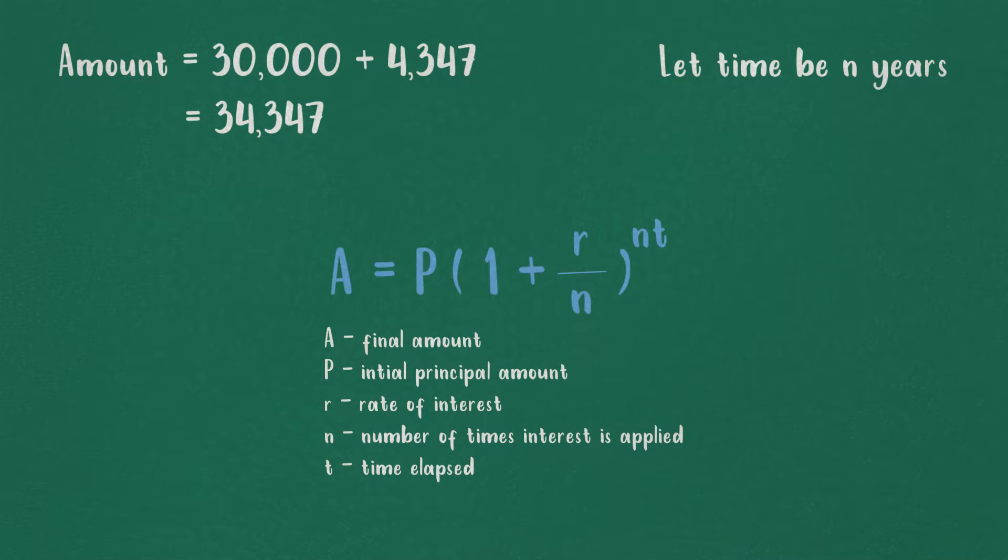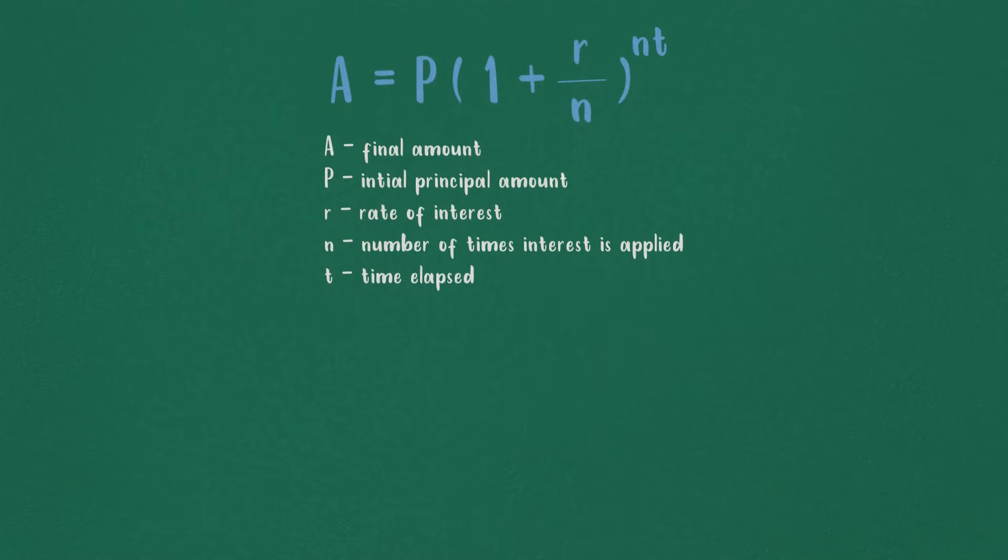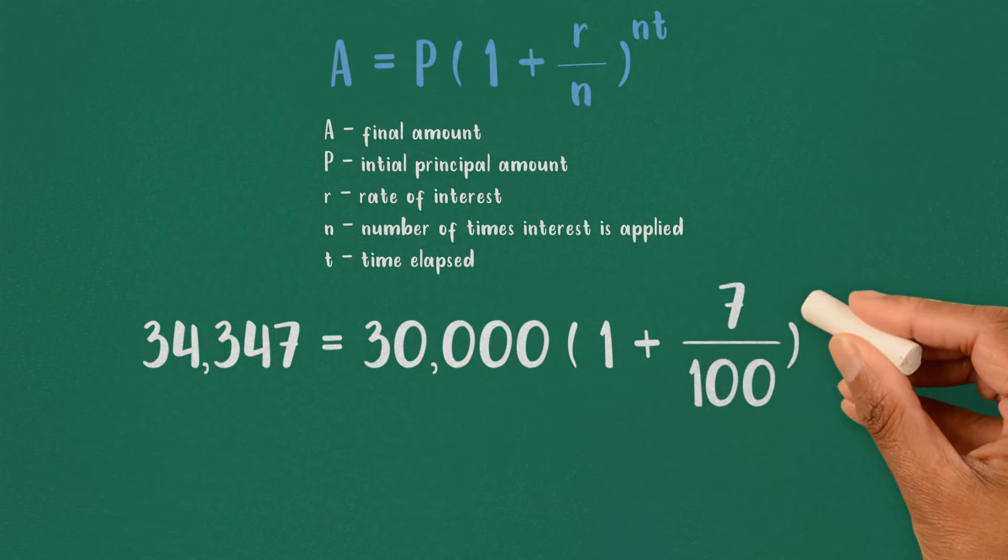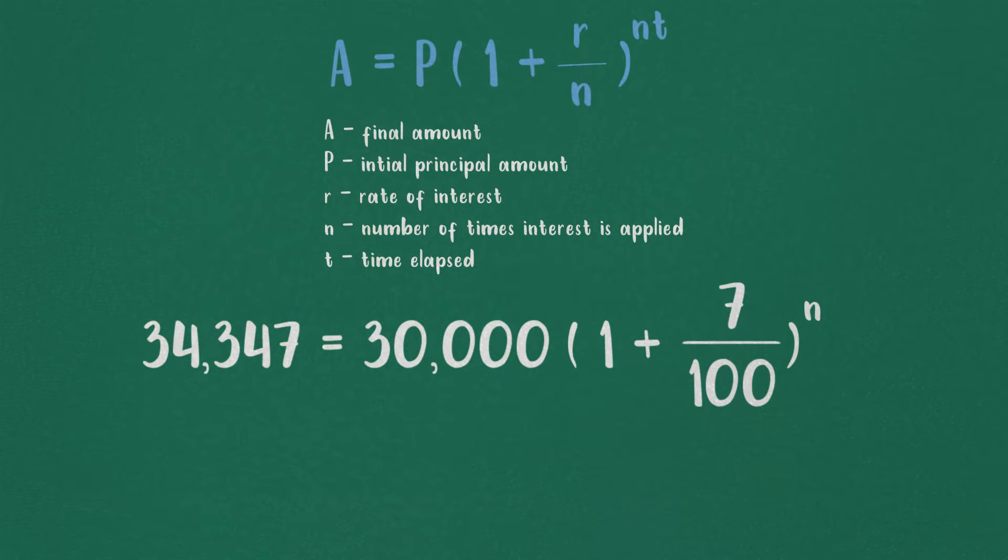So, substituting our values, we get 34,347 equals 30,000 times 1 plus 7 by 100, whole raised to N.